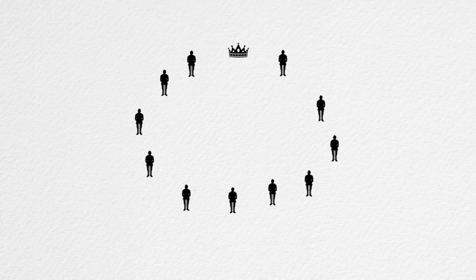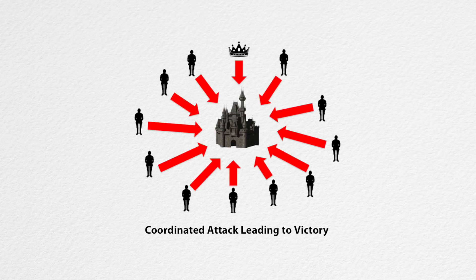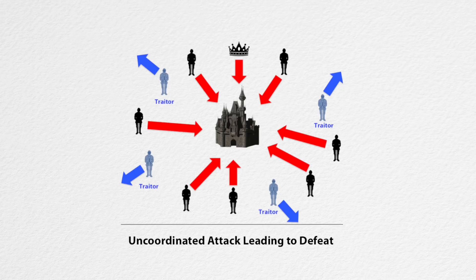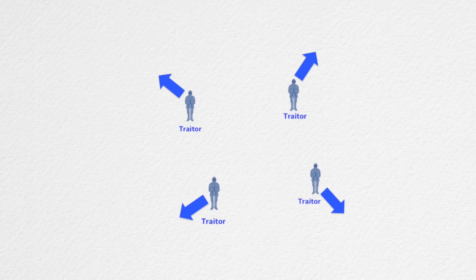Imagine 12 generals for the Byzantine empire have encircled the city of Rome with their armies. In order to successfully overthrow Rome, the generals must attack or retreat in unison. If any general acts opposite of the consensus decision, the armies will be routed and defeated. The decision to attack or retreat is put to a vote, and whichever receives greater than 50% of the vote is what the generals agree to do. This has its flaws because any number of generals could be bribed to betray the Byzantine empire. There are also improperly functioning generals making the wrong decisions, and since the generals are in different geographic regions, couriers carrying the votes could be bribed or even just deliver the completely wrong message.